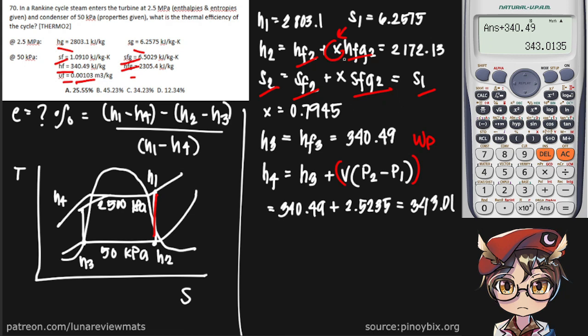Now we have everything we need to find the thermal efficiency of our cycle. H sub 1, H sub 2, H sub 3, and of course, H sub 4.